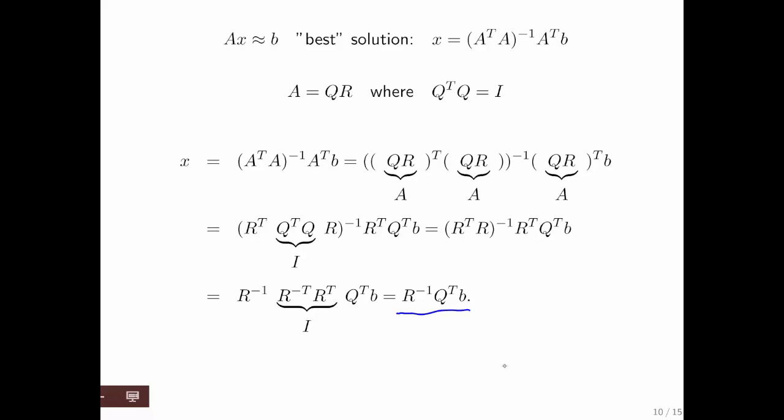Now we don't actually want to invert matrix R. What we want to recognize is that we can form a new right-hand side, Q transpose b. And with that right-hand side, we can solve the upper triangular system Rx equal to that vector. Because remember, R was an upper triangular matrix.